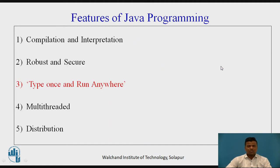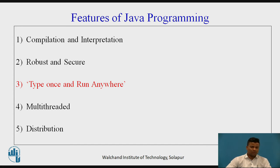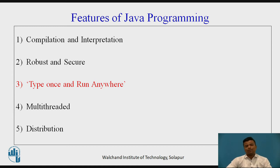The features of Java programming include compilation and interpretation — these are the two stages of Java programming. Java is robust and secure; its tagline is 'Write once, run anywhere.' Java is a multi-threaded language, meaning multitasking, and we can distribute Java software or code very easily.